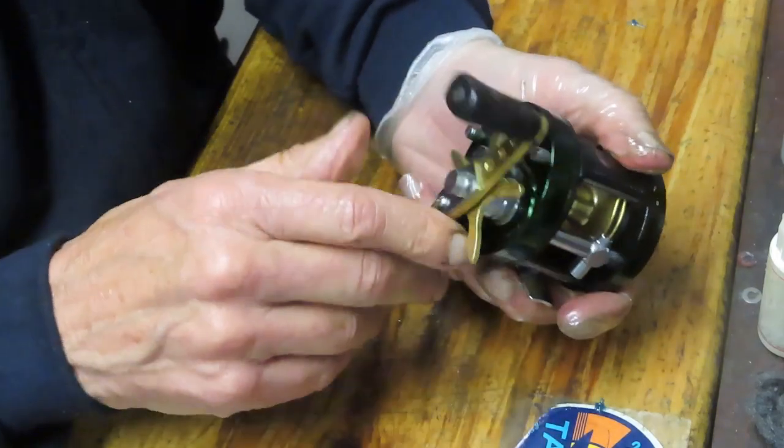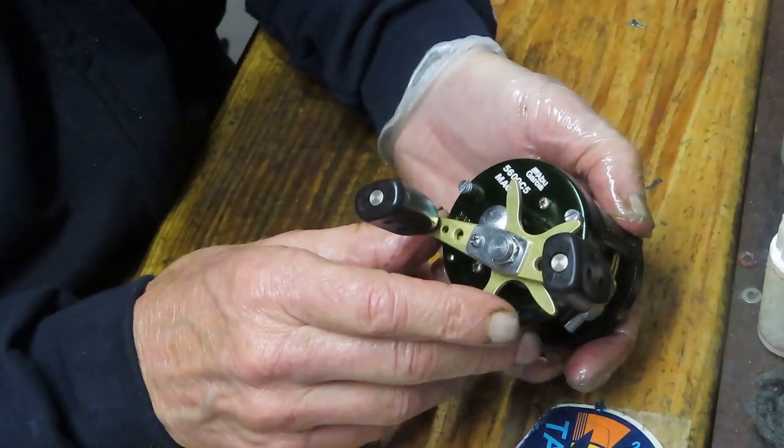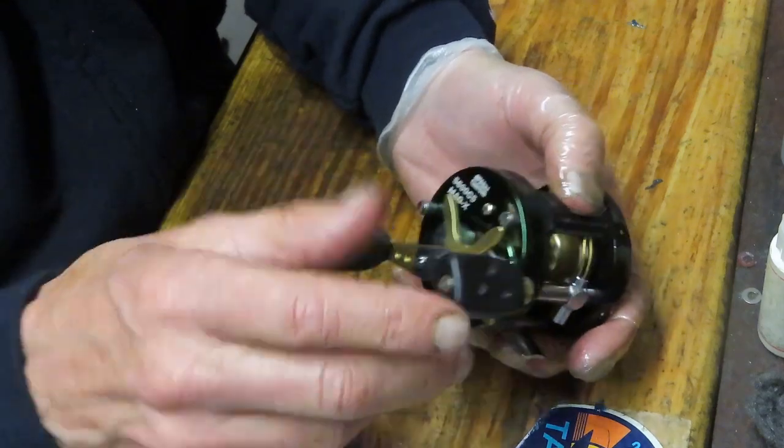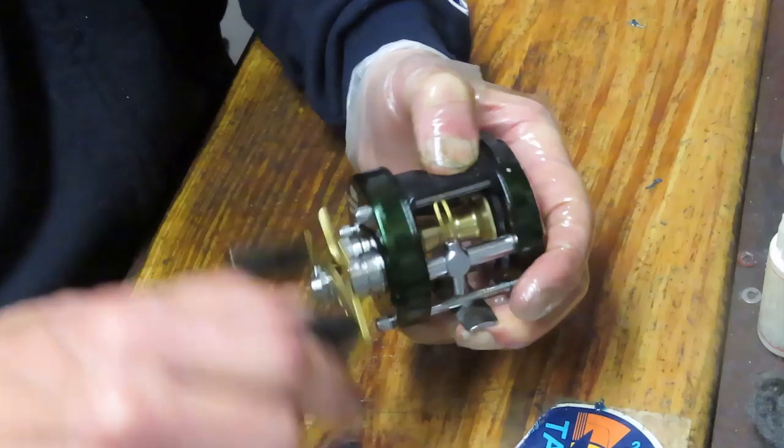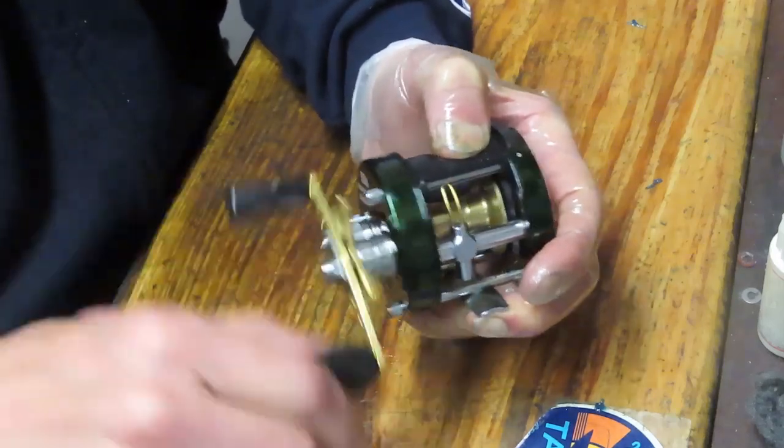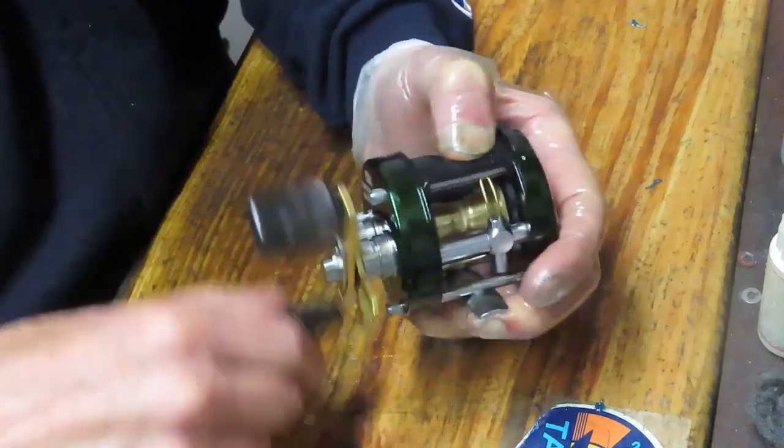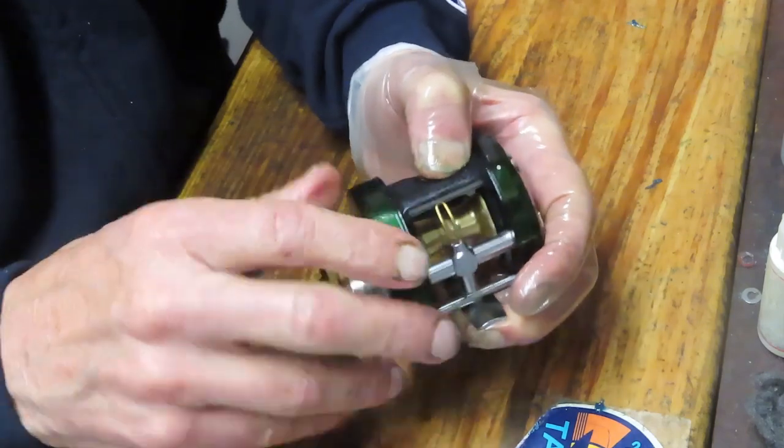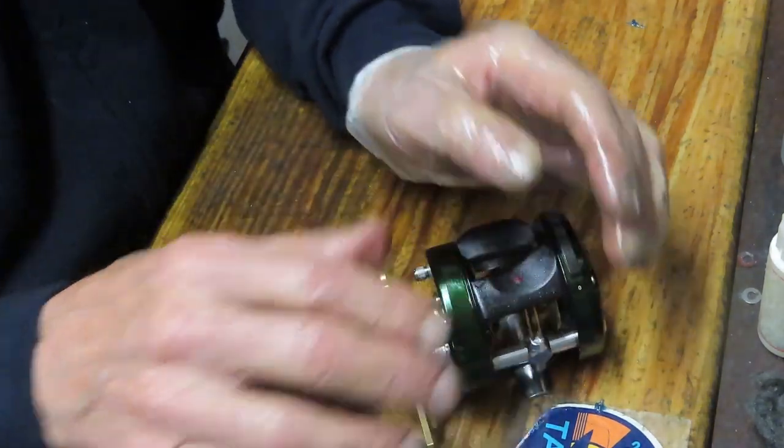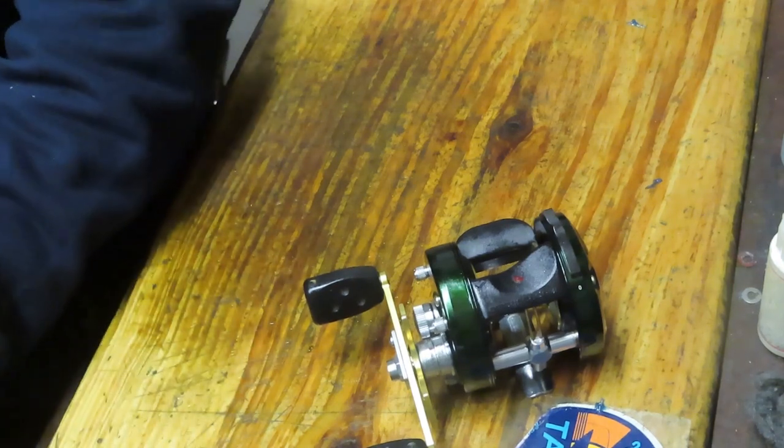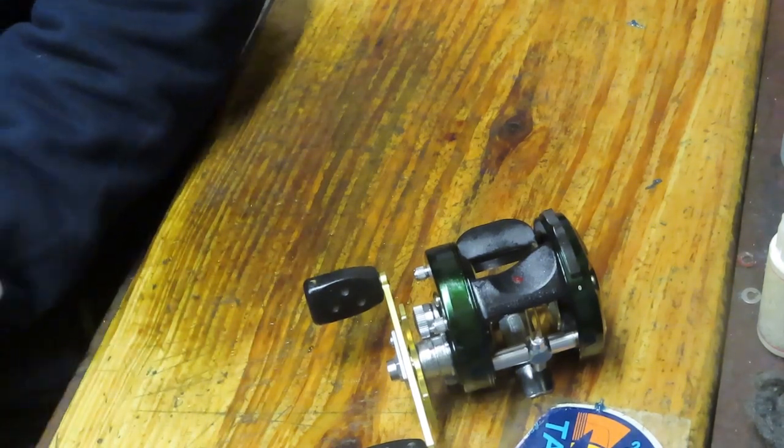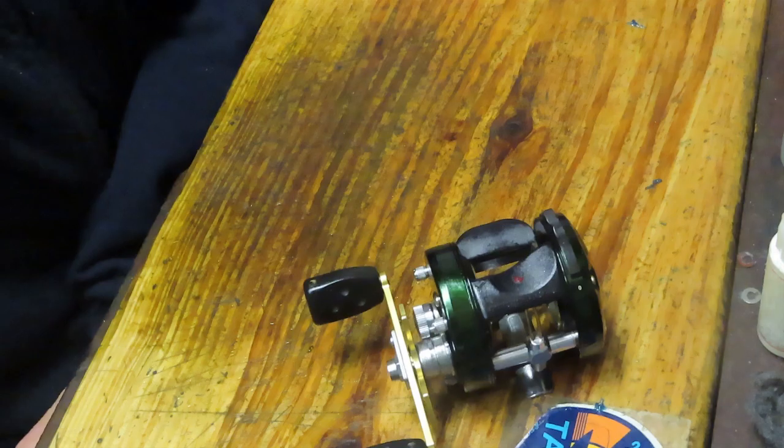That's it. That's your Ambassador 5600 C5 Mag X made in Sweden. I hope you've enjoyed the video. Thank you for watching. And thank you to all of our first responders and essential personnel who work to keep us safe every day. To everyone, please stay safe. Stay well. Enjoy the art of fishing reel repair. Don't forget to go fishing. And have a great day. This is Dennis with Second Chance Tackle.